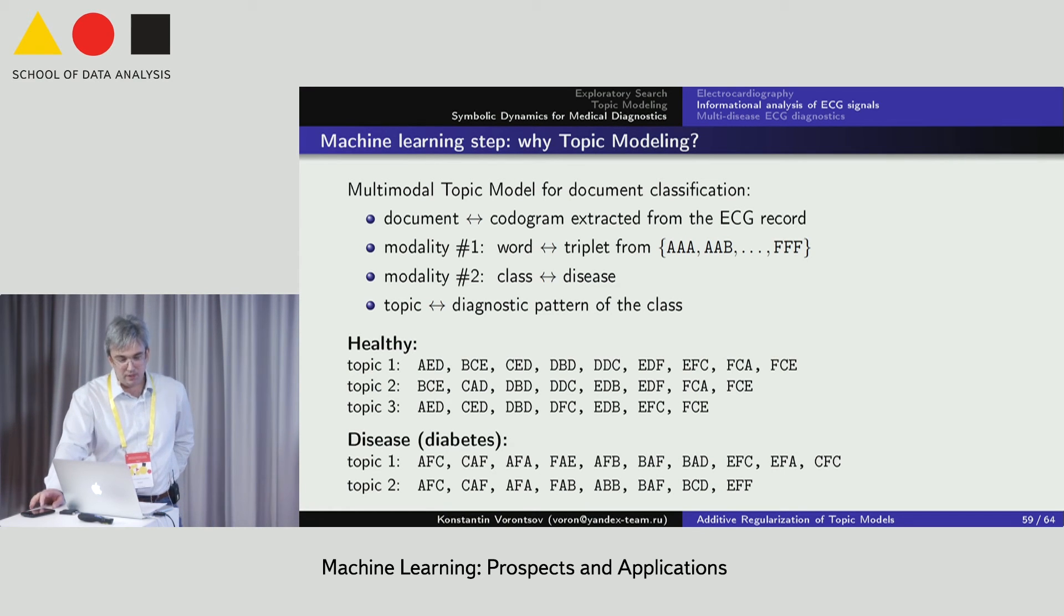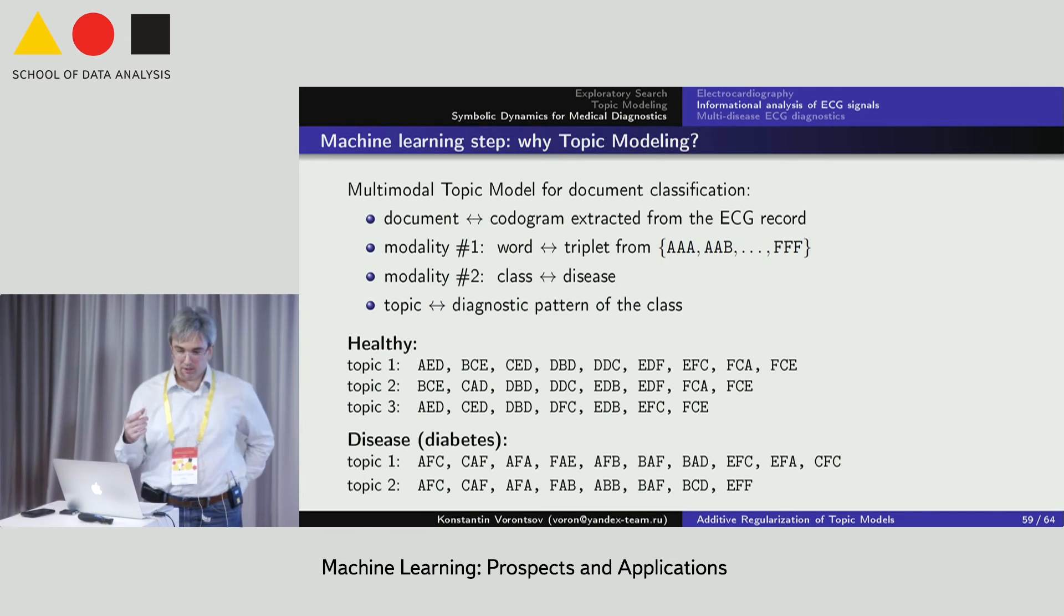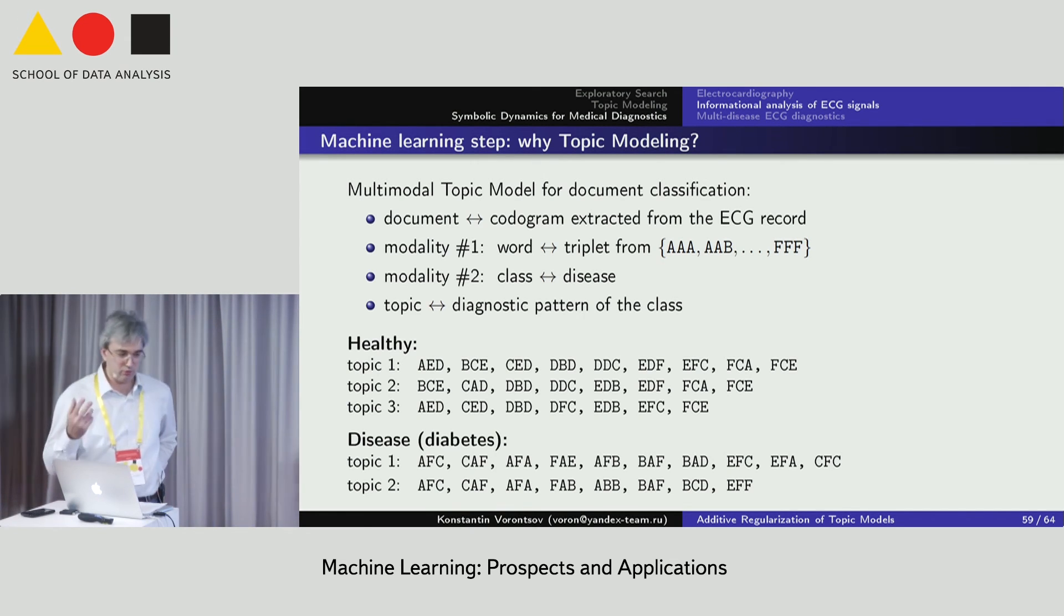To learn the classifier, we use a supervised topic model with two modalities. So supervised can be realized by multi-modal, two modalities, multi-modal topic model. Class labels, first modality is our triplets or words containing three symbols each. And the second modality is class, that is the disease. Probabilistic topic model returns the probability of each disease for each ECG record, which is very useful for risk assessment. And we use additive regularizers for sparsing, decorrelation and to model two modalities, and to find the compact clusters of frequent triplets for each disease.